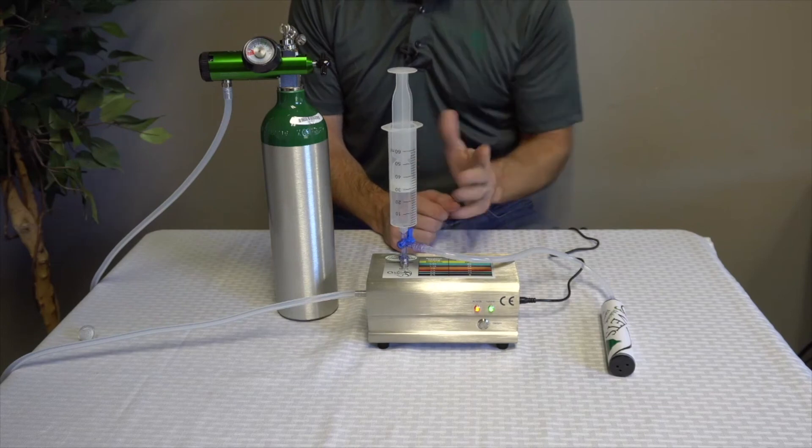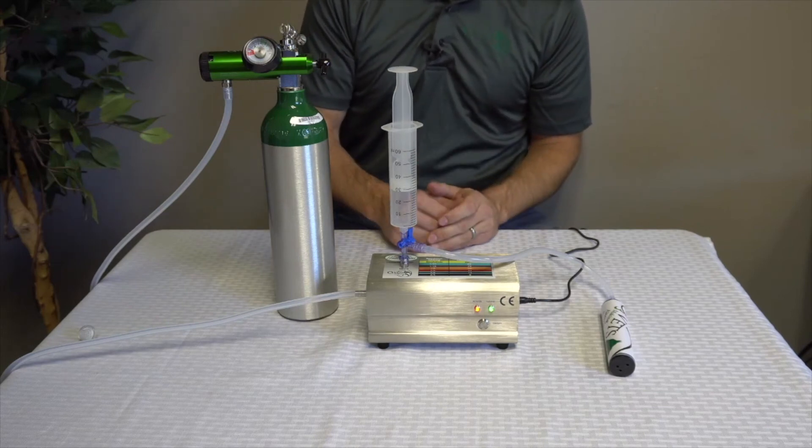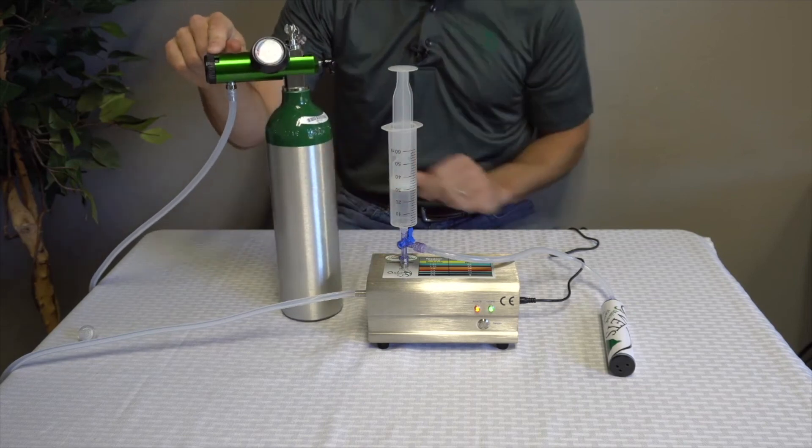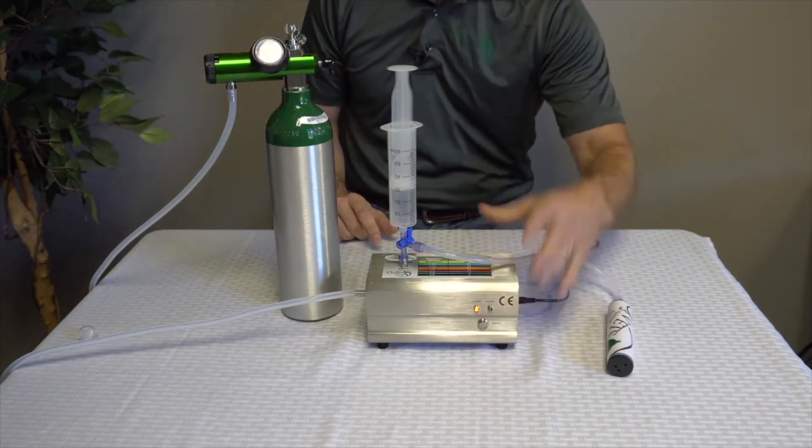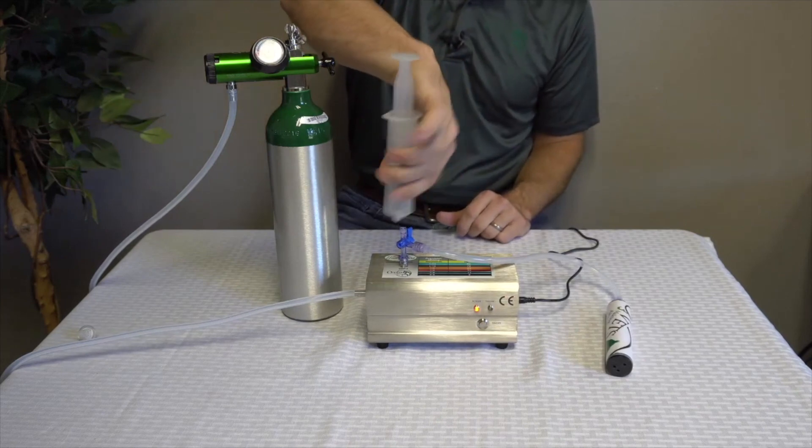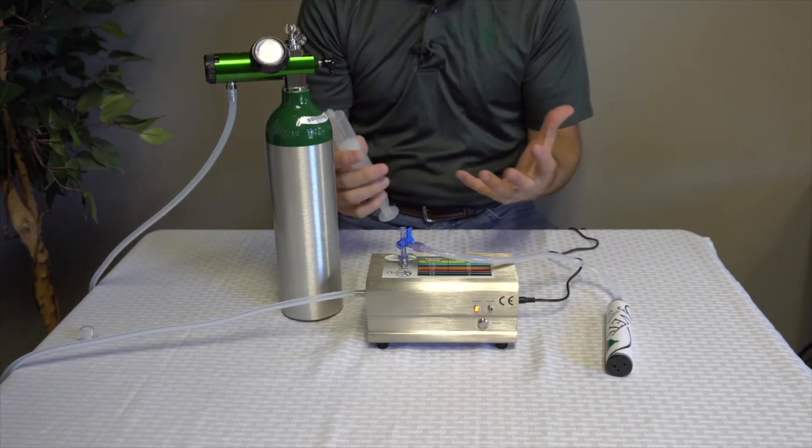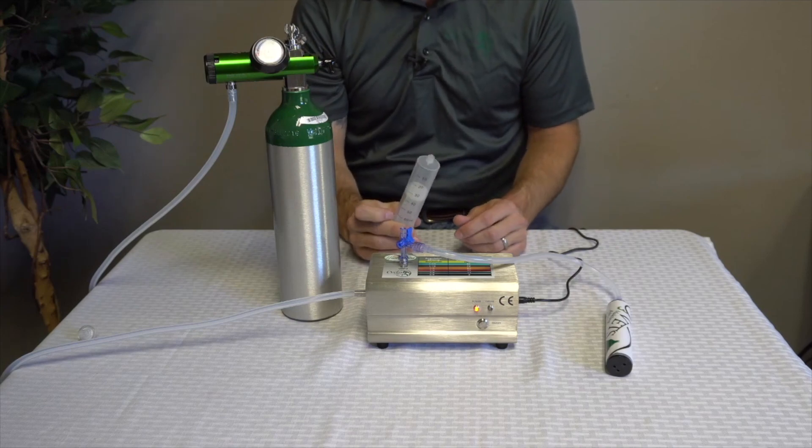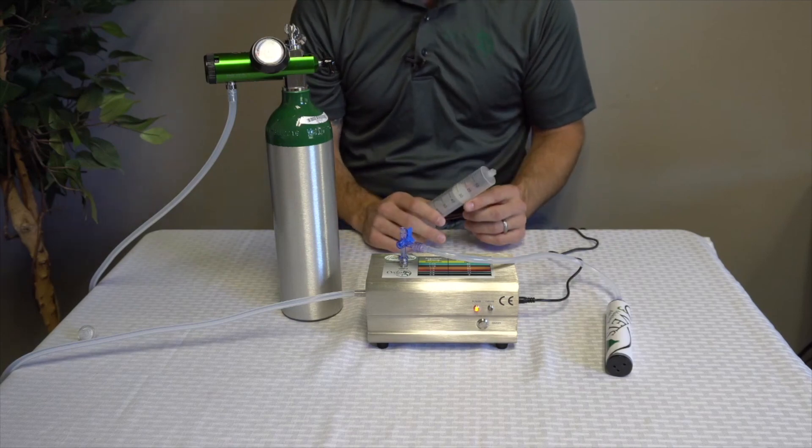So once I've got what I need, I can actually turn my ozone off to the syringe. I can turn my oxygen off; that's something I always want to do so I don't lose my oxygen. I can turn my generator off, and I can take my syringe and go use it, or the bag if I'm filling a bag, or whatever I have there. So that's how that works.